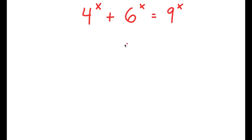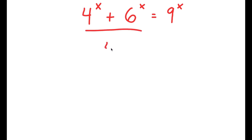In this problem, I have 4 to the power of x plus 6 to the power of x is equal to 9 to the power of x. To solve this, I'm going to divide both sides by 4 to the power of x.